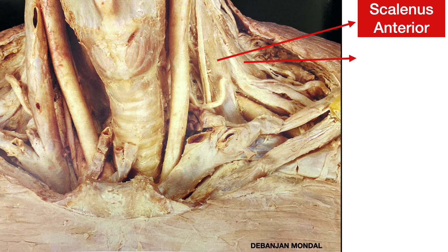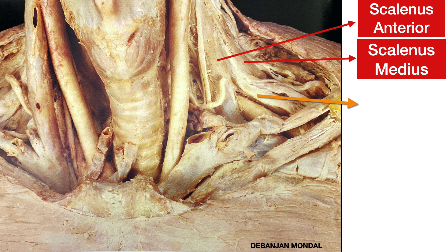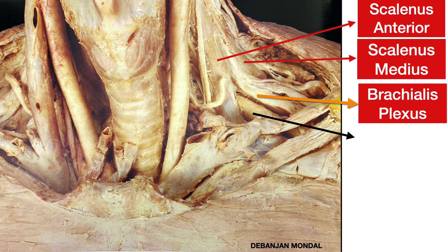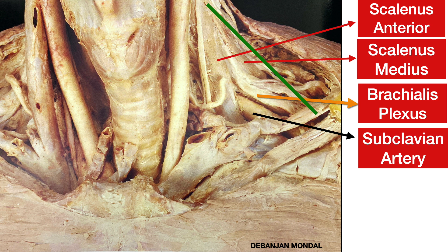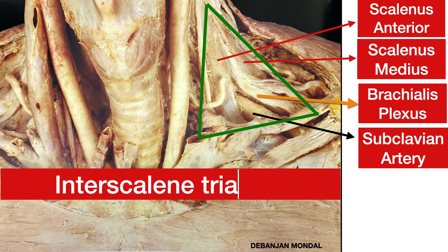Before starting these tests, we should know a little bit about the Scalene Triangle, also known as the Inter-Scalene Triangle, which is located laterally at the root of the neck. It is bordered anteriorly by the posterior edge of the anterior Scalene Muscle, posteriorly by the anterior edge of the middle Scalene Muscle, and inferiorly by the superior aspect of the first rib.